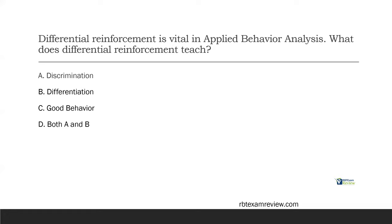Answer B — differentiation. Differentiation is similar, except now we're teaching two different responses, not two different stimuli. Consider credit card machines where we used to swipe and now we insert the chip card. If you swipe, it won't let you pay and prompts you to insert. The swiping behavior is on extinction; the insert behavior is reinforced. Differential reinforcement taught you a different response — differentiation. Answer C — good behavior. Differential reinforcement can teach good behavior, but it can also teach bad behavior. It depends on your implementation and what you're reinforcing. The best answer is both discrimination and differentiation — A and B.